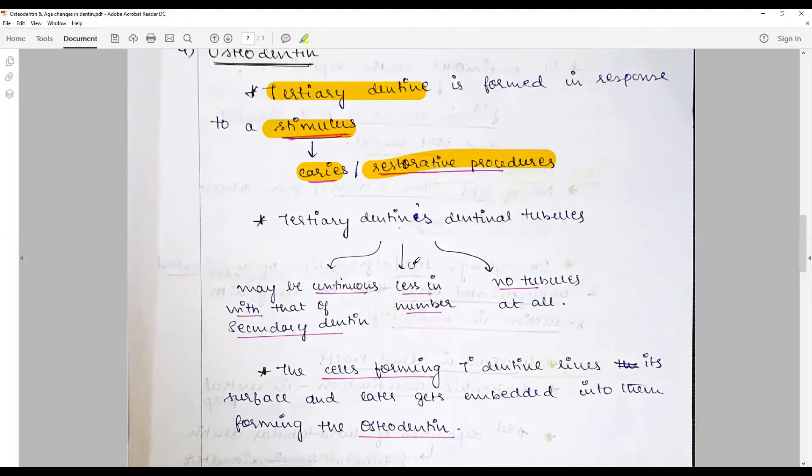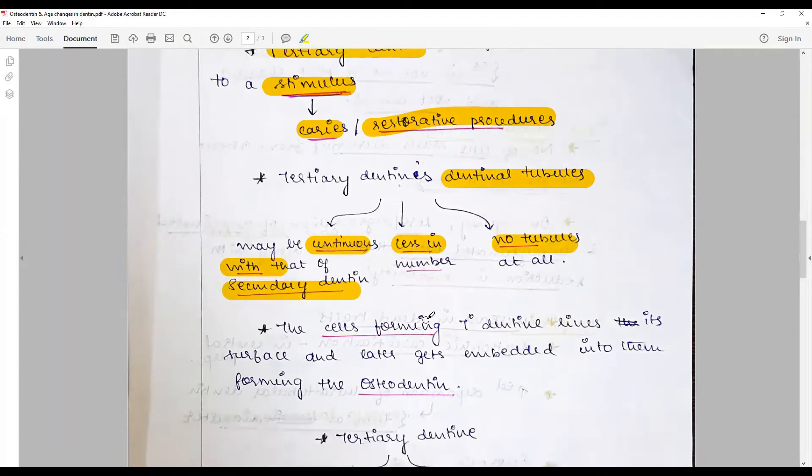The main points to keep in mind: it also has dentinal tubules but not normal tubules. It may be continuous with that of secondary dentine but with less in number or no tubules at all.